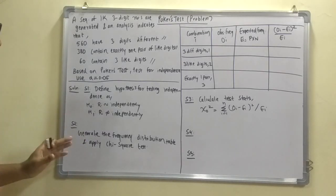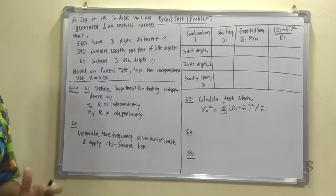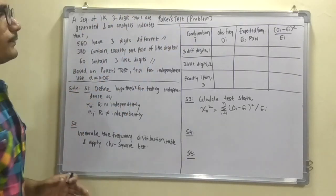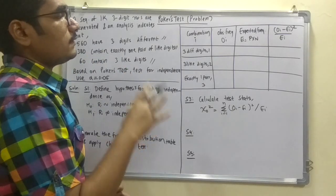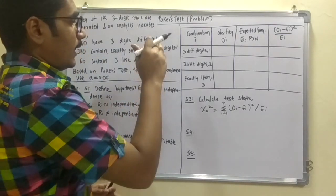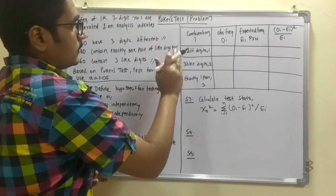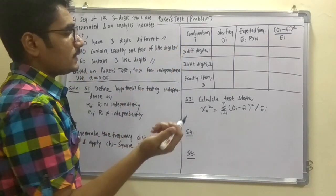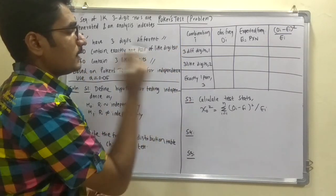So secondly you have to generate the frequency distribution table and you have to apply Chi2 test on that. So this table contains 4 different columns and 3 different rows. These rows are these conditions, that is the ABC conditions. That is 3 different digits, 3 like digits and exactly 1 pair.